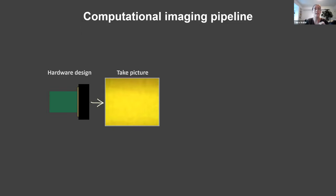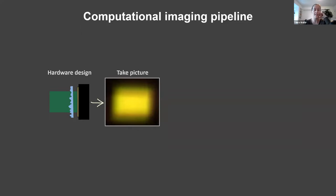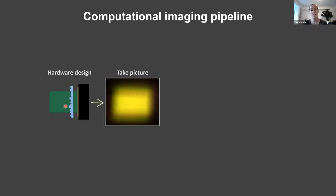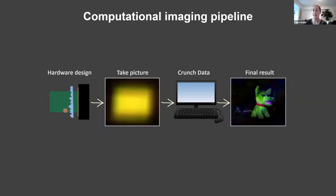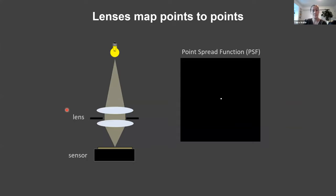DiffuserCam puts something in the way of the light — a diffuser, which is just a bumpy piece of plastic. Sometimes we do this with Scotch tape or those stickers you put on your window so your neighbors can't see in. The diffuser is a scattering element placed really close to the sensor, within a few millimeters — we just stick it onto the cover glass on top of the sensor. This optical element isn't a lens, but like a lens it's bending the light rays, just in an unknown random way.